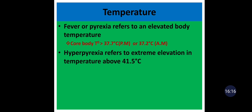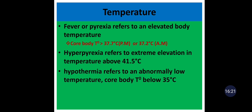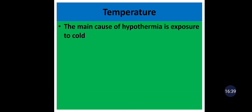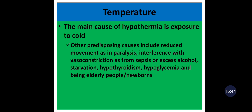Hyperthermia occurs when the body is unable to control excessive heat production or excessive heat exposure. Hypothermia refers to an abnormally low temperature when core body temperature falls below 35°C. Causes of fever include infection, trauma, malignancy, hematologic malignancies, drug reactions, and immune disorders. The main cause of hypothermia is exposure to cold. Other predisposing causes include reduced movement as in paralysis, interference with vasoconstriction from sedatives or excess alcohol, starvation, hypothyroidism, hypoglycemia, and elderly or newborn patients.